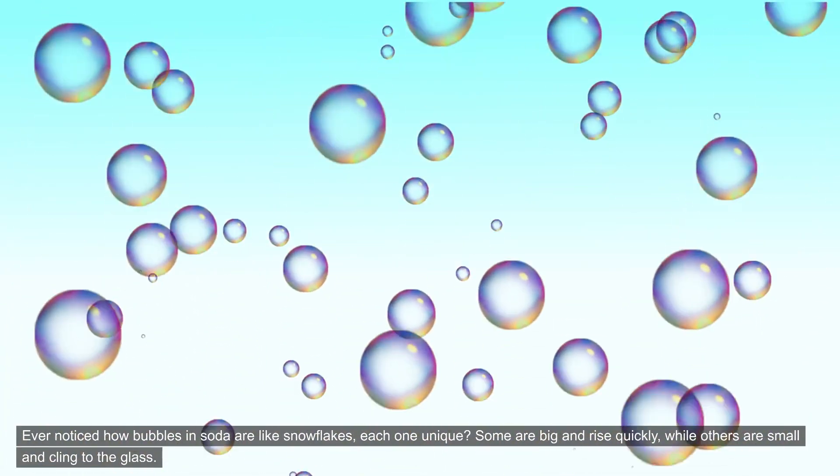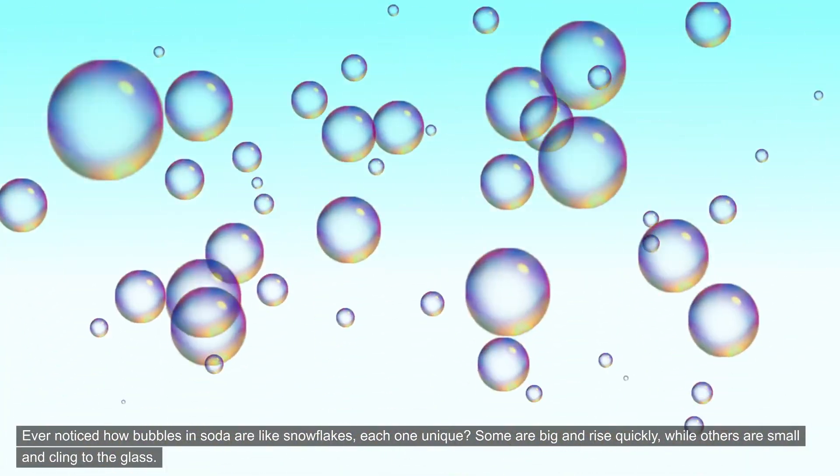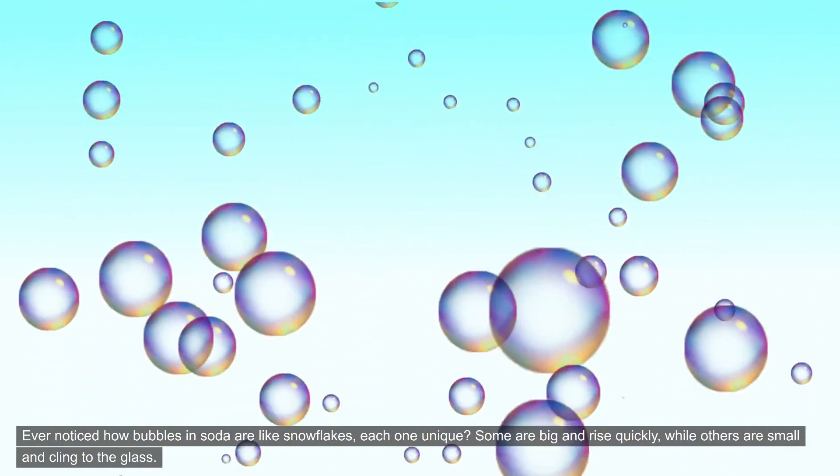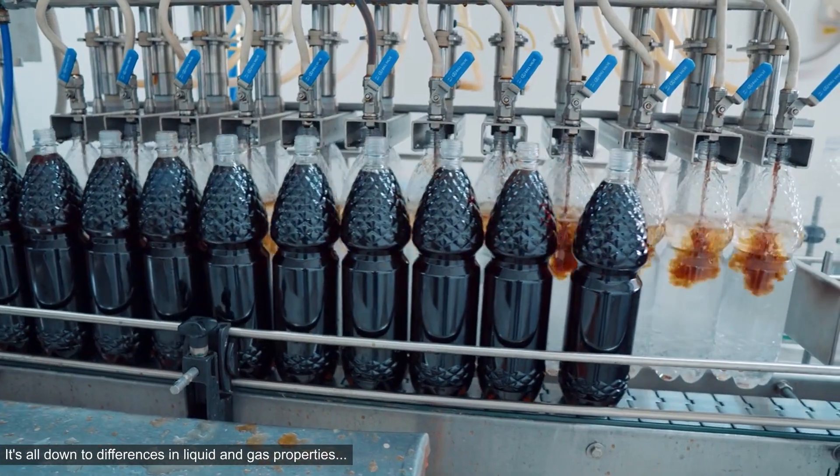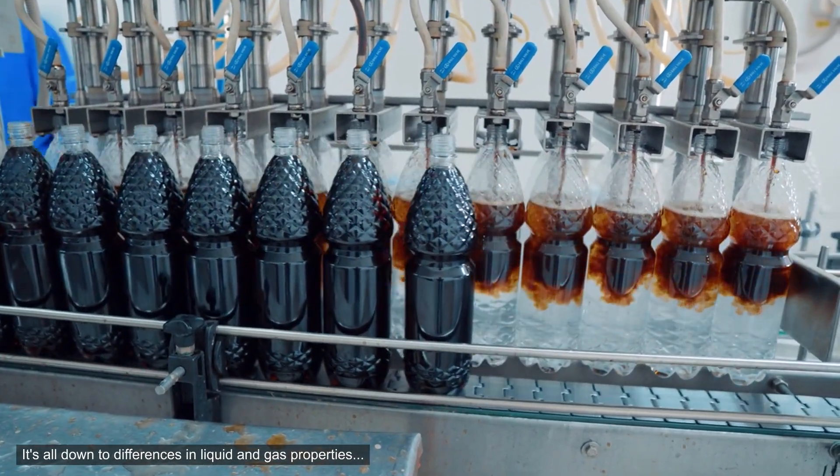Ever noticed how bubbles in soda are like snowflakes, each one unique. Some are big and rise quickly, while others are small and cling to the glass. It's all down to differences in liquid and gas properties.